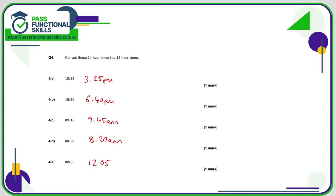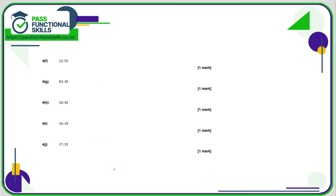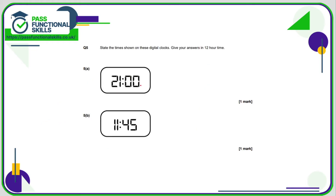00:05 is 5 past midnight — midnight is 00:00, so this is a morning time; as soon as the clock strikes midnight we are in am. 23:55 subtract 12 from 23 gives 11:55. 03:30 is 3:30 am. 10:45 is before midday so it's 10:45 am. 16:10: 16 minus 12 is 4, so that's 4:10 pm. 17:35 subtract 12 gives 5:35 pm.